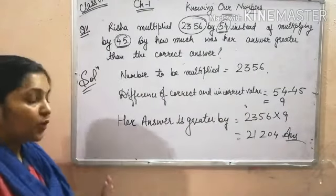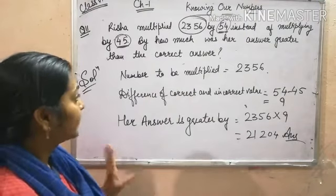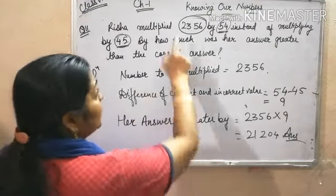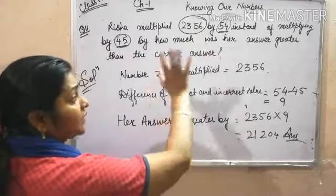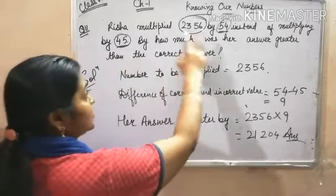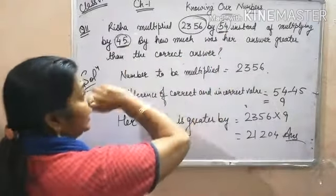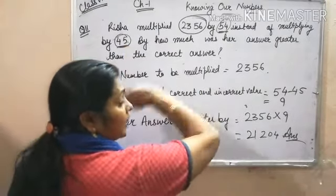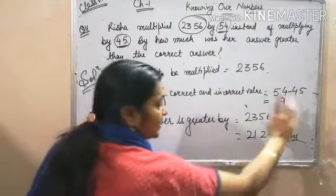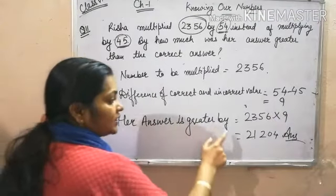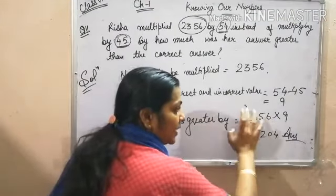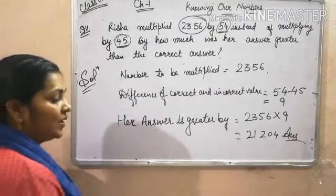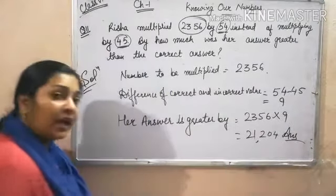Let me repeat once again what you have to do in this question. The number to be multiplied is 2356. Find the difference of the correct and incorrect value. The correct value is 45, the incorrect value is 54, and their difference is 9. So the answer is greater by 2356 into 9, which is 21204.